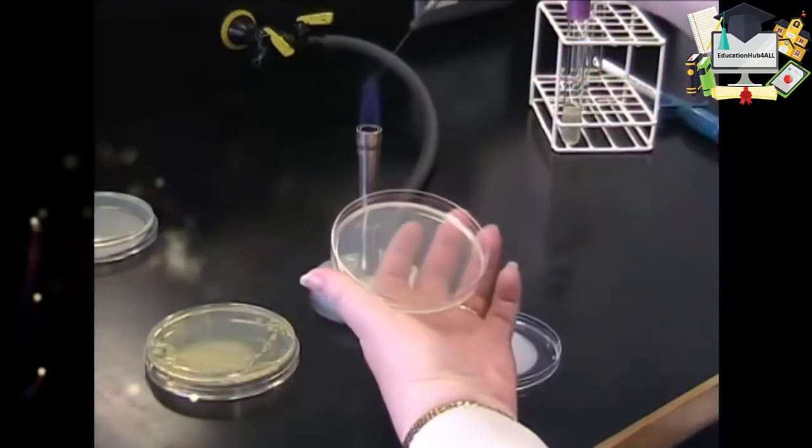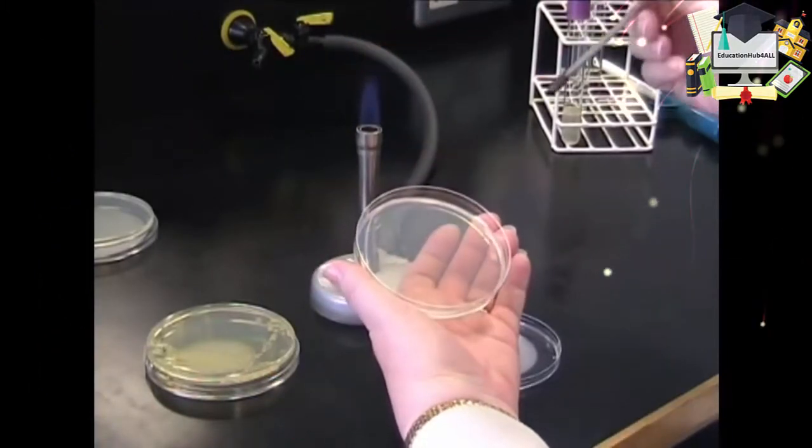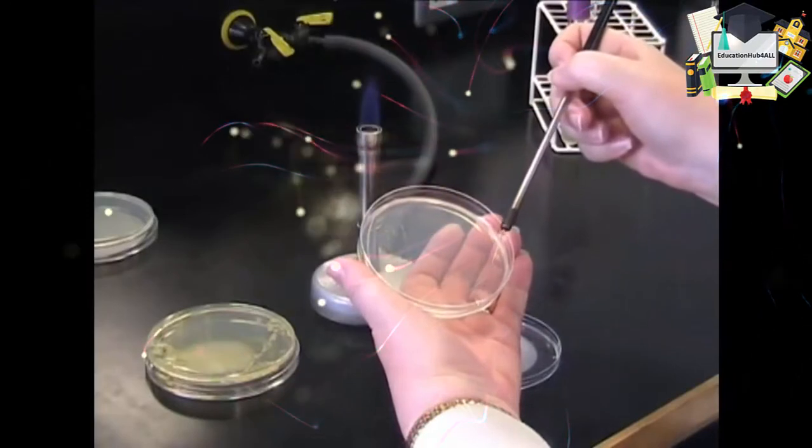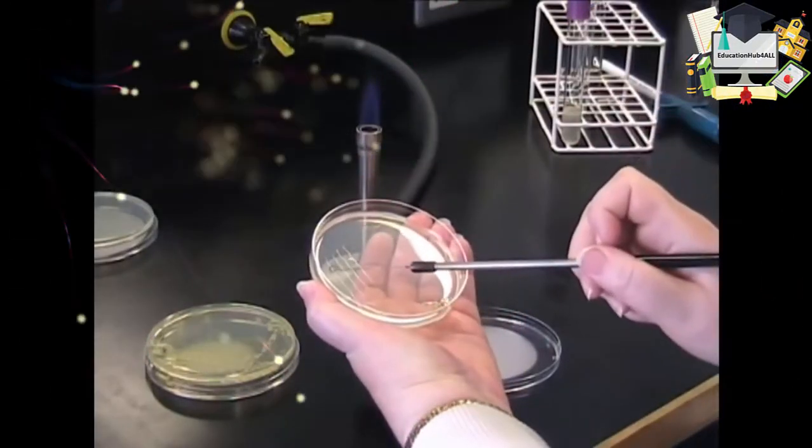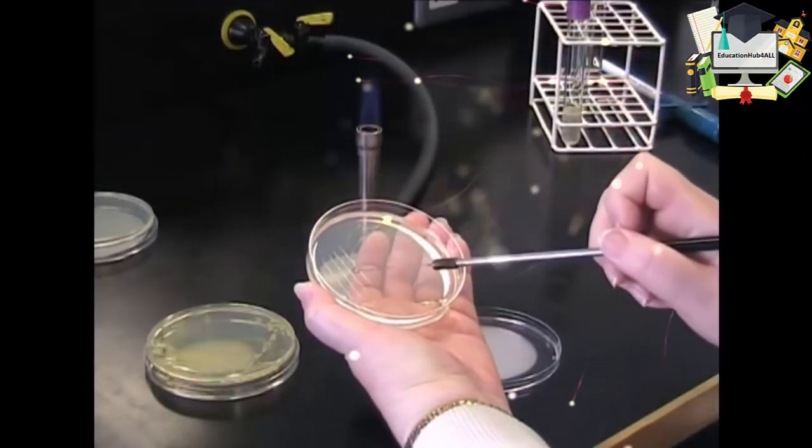It's important now to flame your loop again as before. Cool your loop. And repeat this process, taking one streak from each of the four across your agar plate.